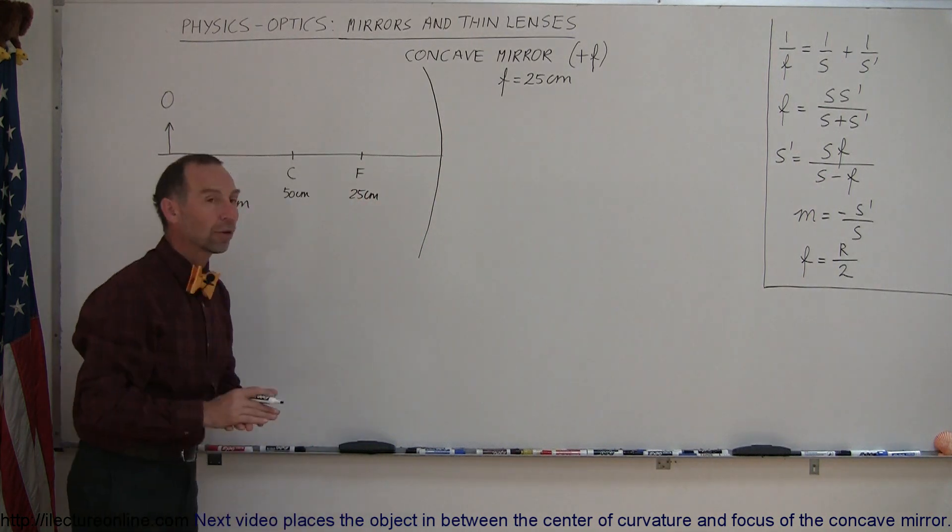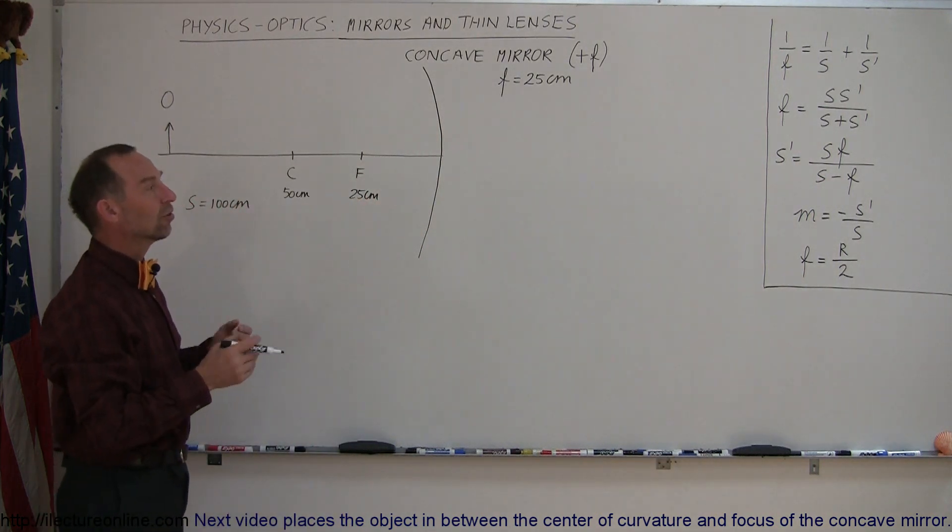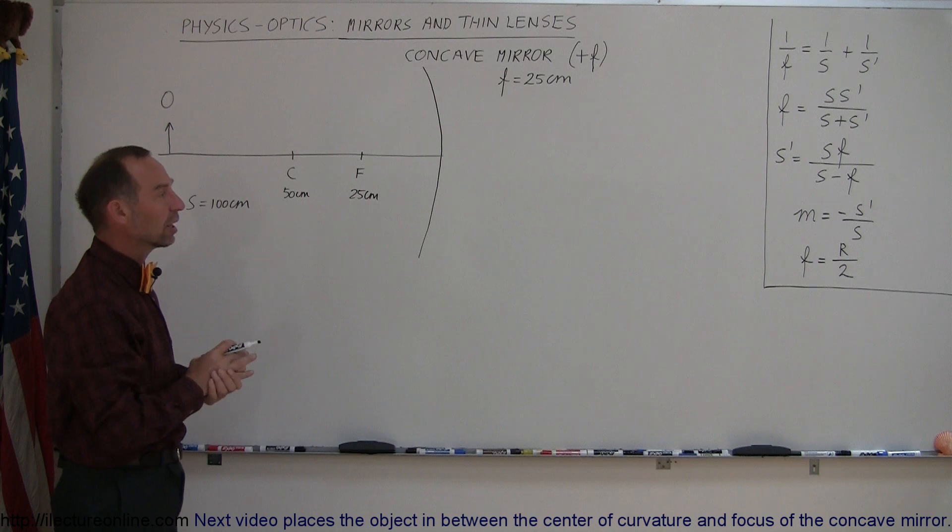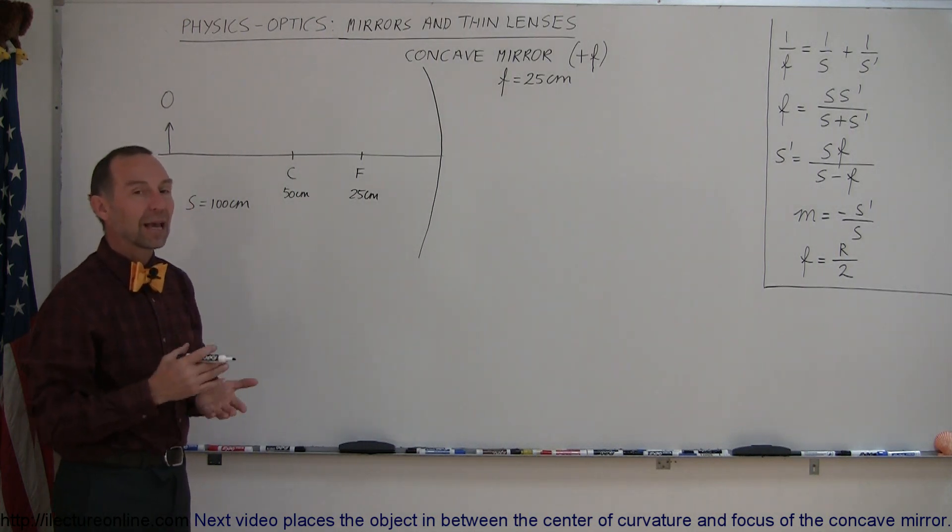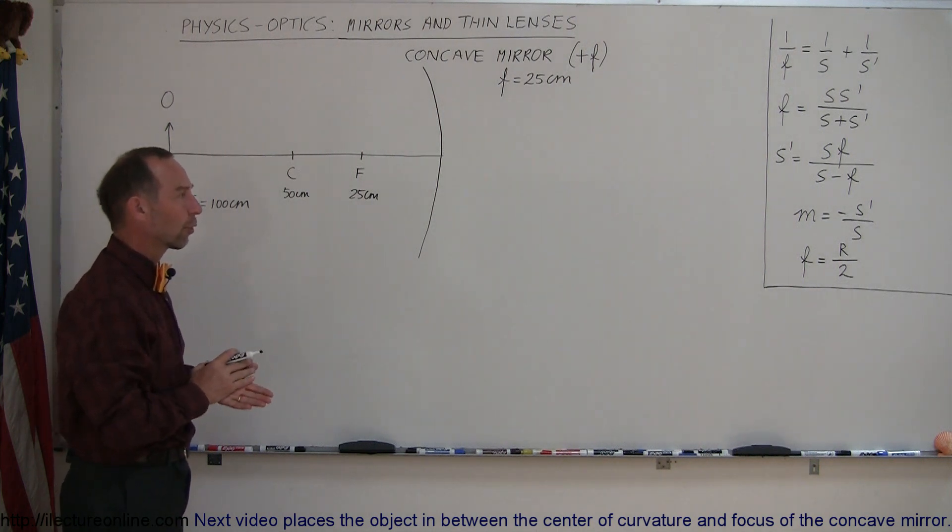So typically we want to know what the image distance is, the distance to the image, the location of the image, if the image is real or virtual, if it's right side up or upside down, and what the magnification of the image is. So those are typically the four things we need to find.